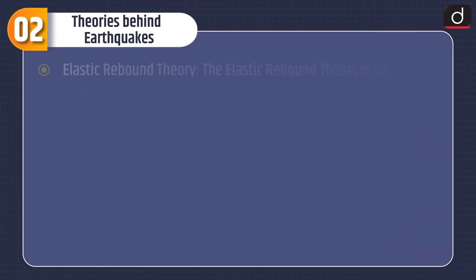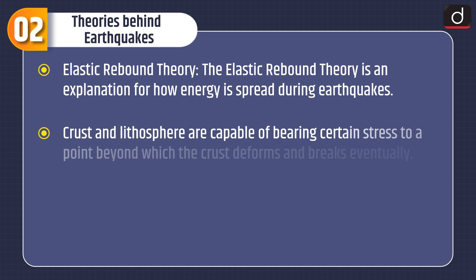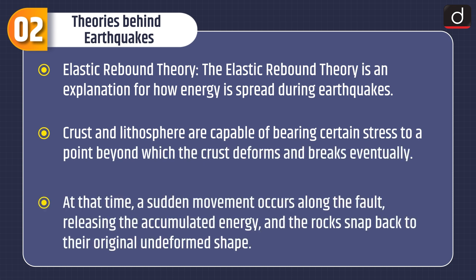Moving on to theories behind earthquakes. The first is elastic rebound theory. The elastic rebound theory is an explanation for how energy is spread during earthquakes. The crust and lithosphere are capable of bearing certain stress to a point beyond which the crust deforms and breaks. At that point, a sudden movement occurs along the fault, releasing the accumulated energy and the rocks snap back to their original undeformed shape.